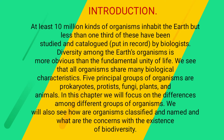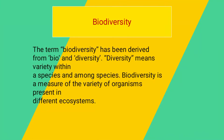Five principal groups of organisms are prokaryotes, protists, fungi, plants, and animals. In this chapter we will focus on the differences among different groups of organisms, how organisms are classified and named, and what are the concerns with the existence of biodiversity. The term biodiversity has been derived from 'bio' and 'diversity.'